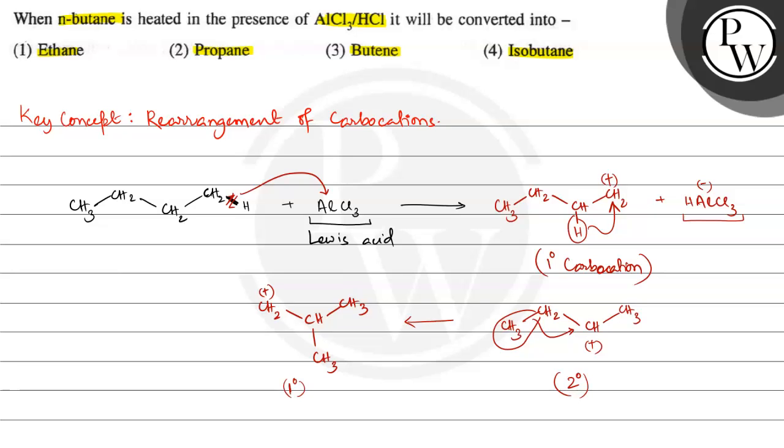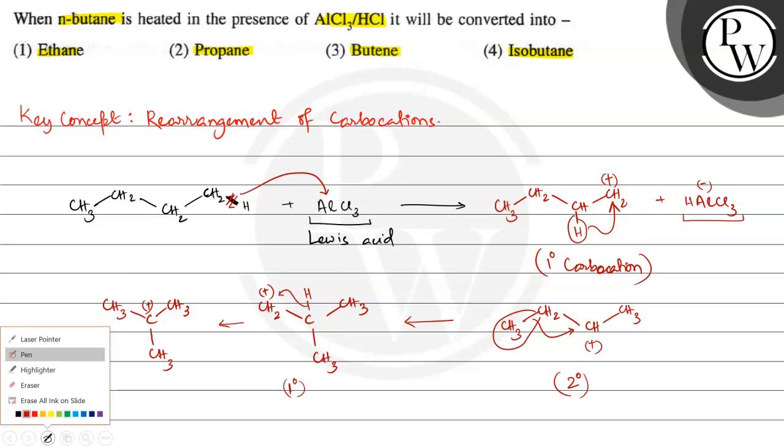Then, in this 1-degree carbocation, at this position a hydride is present. This hydride can migrate, and then we will get a 3-degree carbocation like this: CH3-C-CH3 and again CH3, with a positive charge here. Now, in the reaction medium, HAlCl3- present was there. This donates a hydride again here, and then we will get this structure.